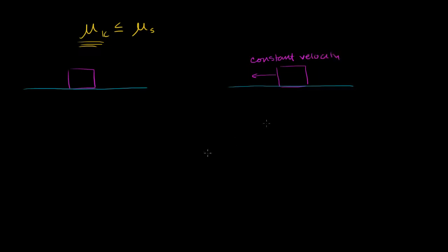And so the interesting thing here is, assuming that these are the same masses, that these are the same surfaces, why should the coefficient of friction here, why should the coefficient of static friction be larger than the coefficient of kinetic friction over here?